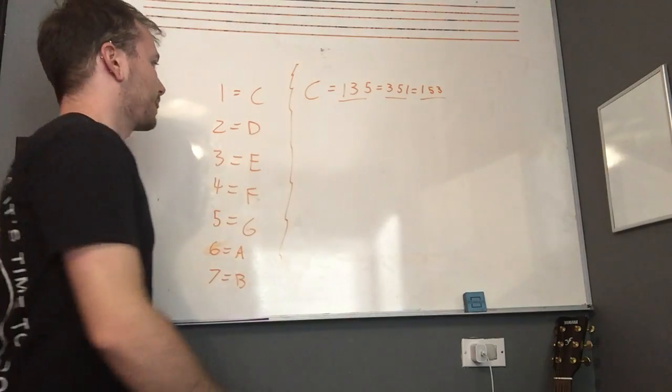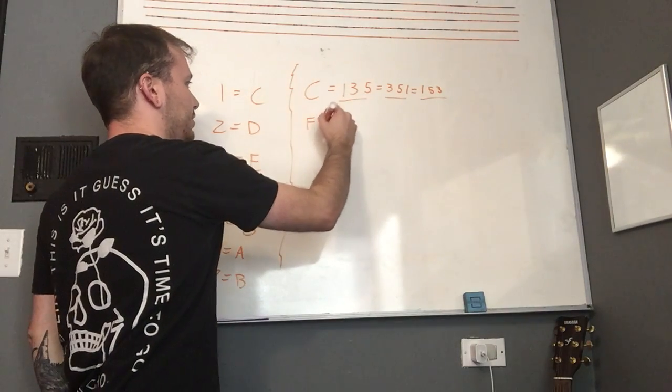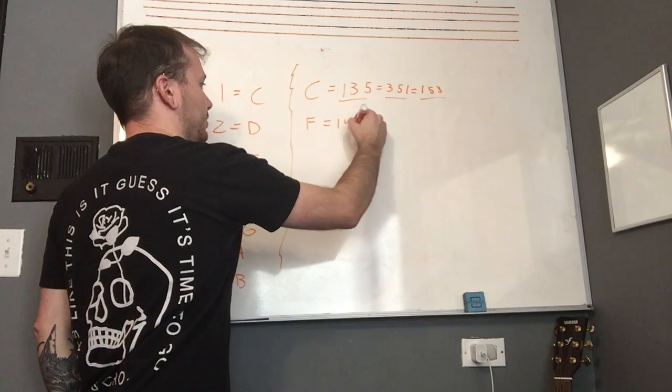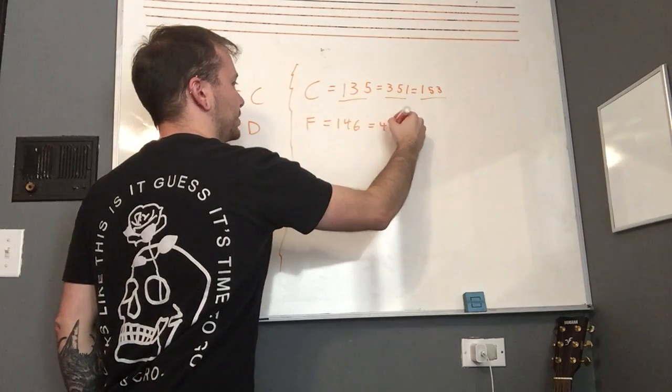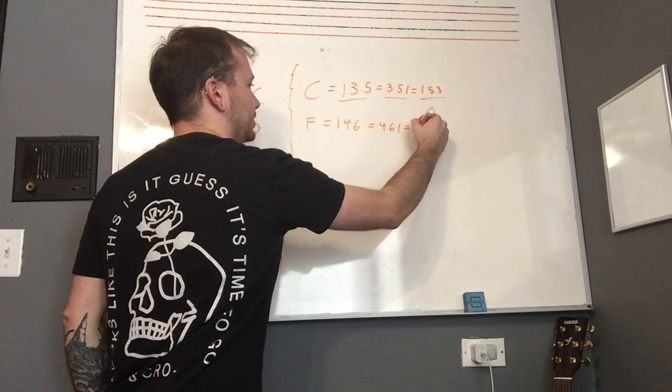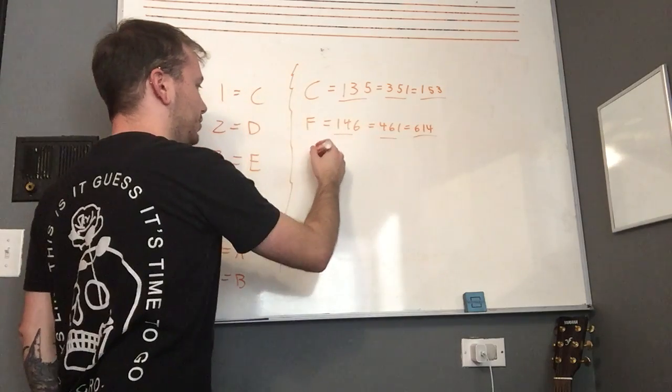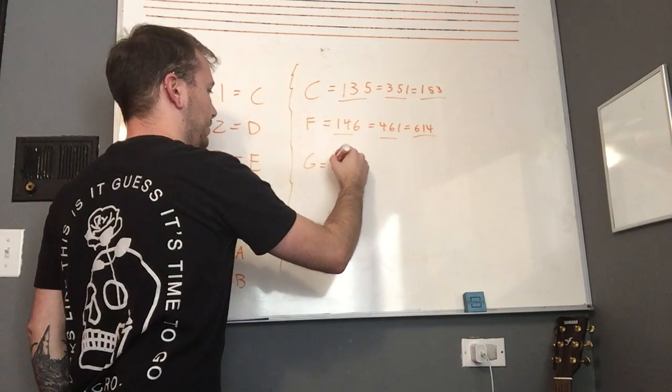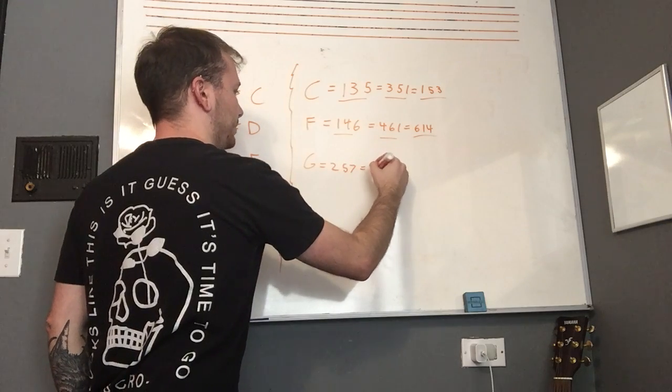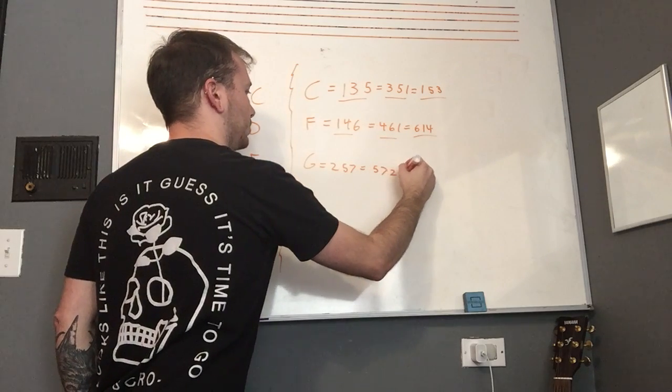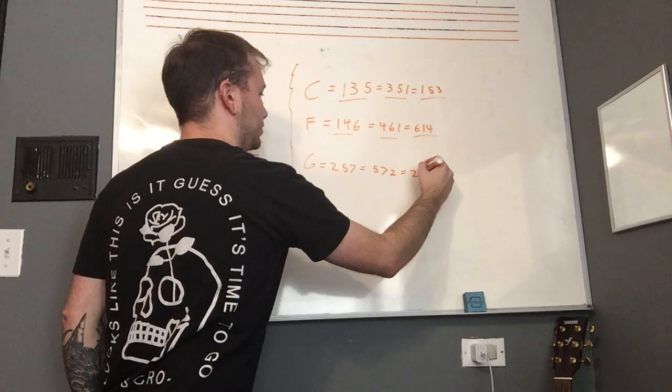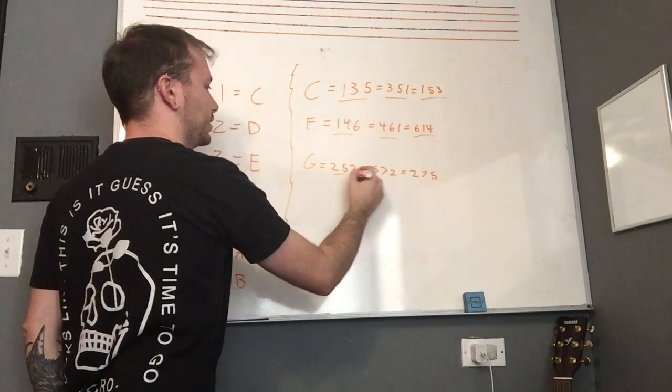So C major or F major is going to be one, four, six, or it could be four, six, one, or it could be six, one, four. Mess around with those inversions however you want. And then G we have two, five, seven, or five, seven, two, or two, seven, five. I mean, however you want to do it.